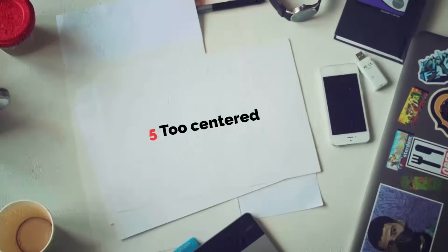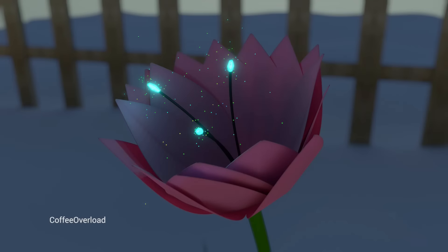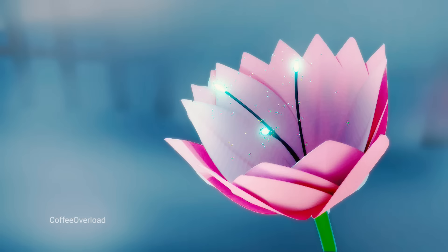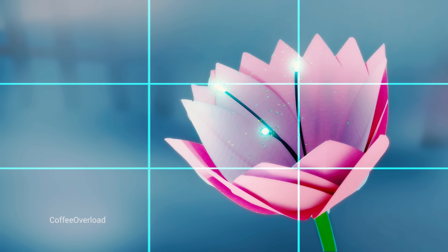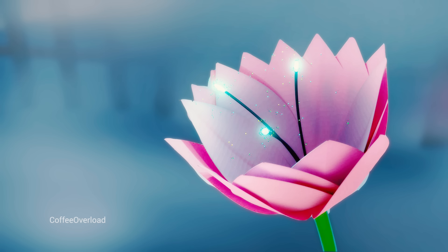And now the composition mistake: too centered. If something becomes too, too balanced, it has a risk of becoming boring. This image by Coffee Overload — I moved it to the right third to break the balance. It's a common place in photography: the rule of thirds. When you're framing or positioning your object, place it where the thirds intersect.